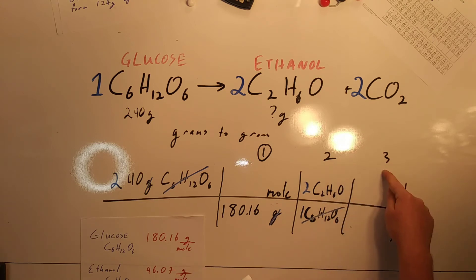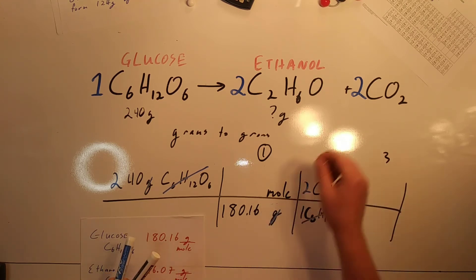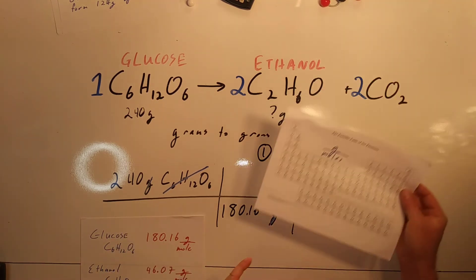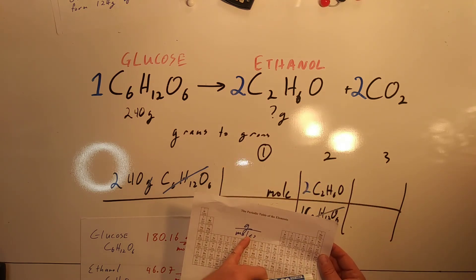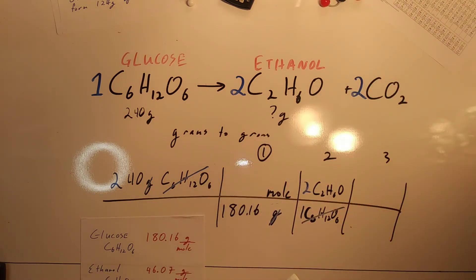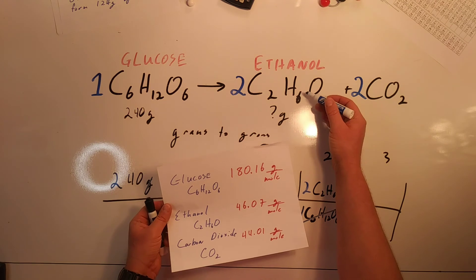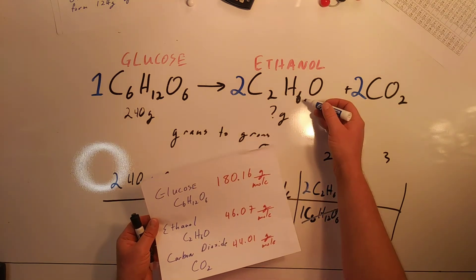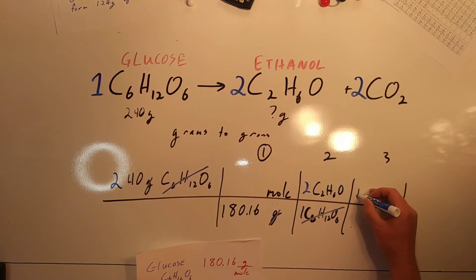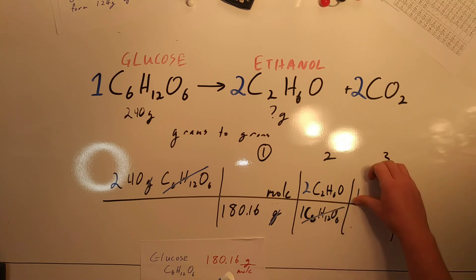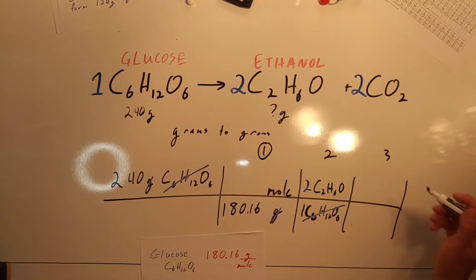In our third and final step, we will go back to the periodic table and find a number for CO2 that has the units grams over moles. I'm sorry, not CO2, ethanol. We are trying to find ethanol. 46.07 grams over moles.